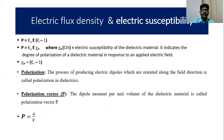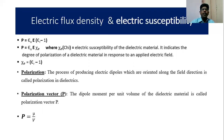Now we can see what polarization is. The process of producing electric dipoles which are oriented along the field direction is called polarization in dielectrics. The dipole moment per unit volume of the dielectric material is called the polarization vector P, given by P = μ / V.